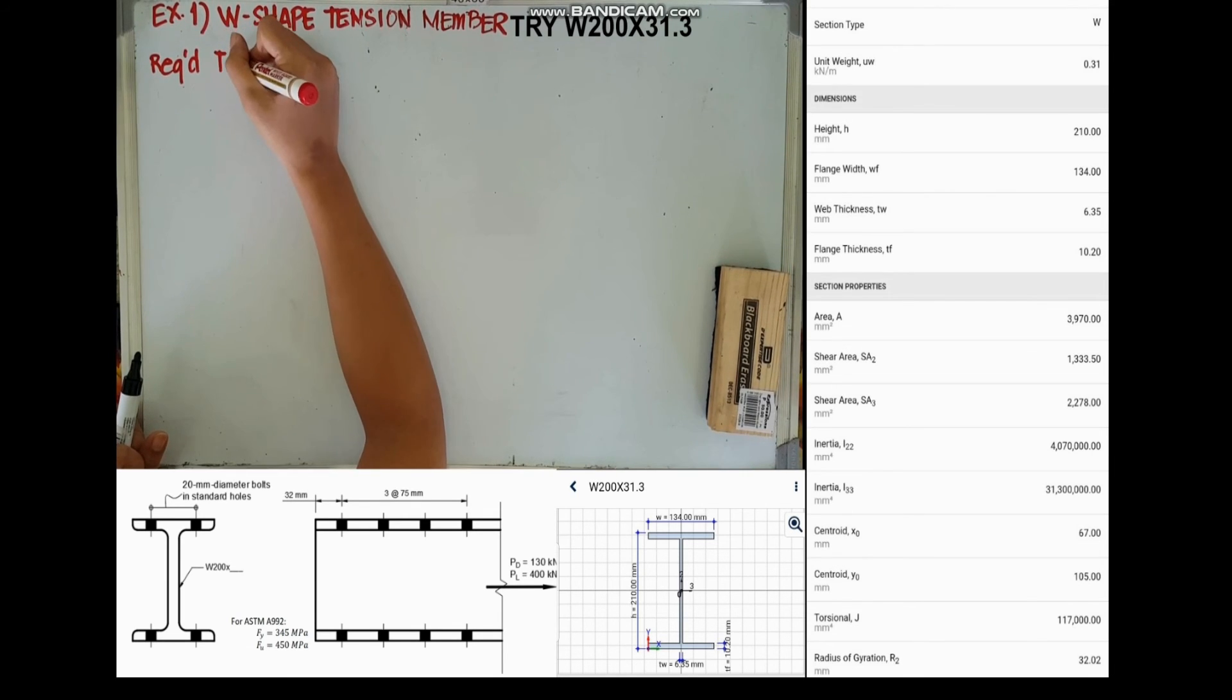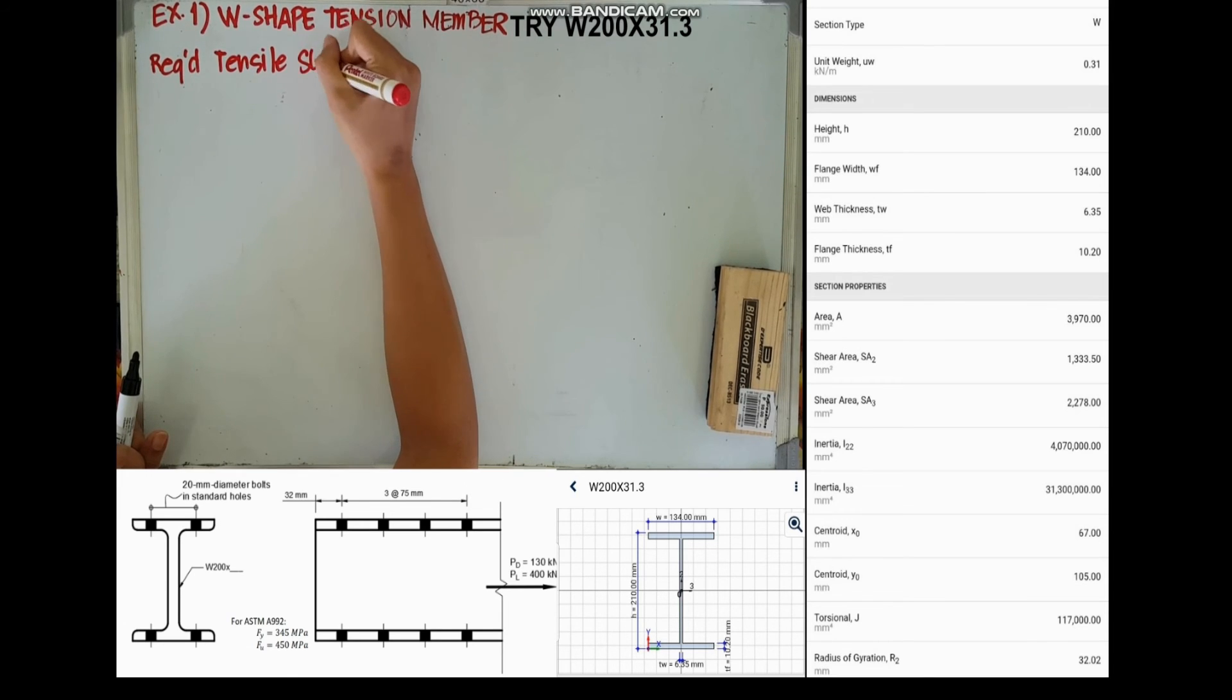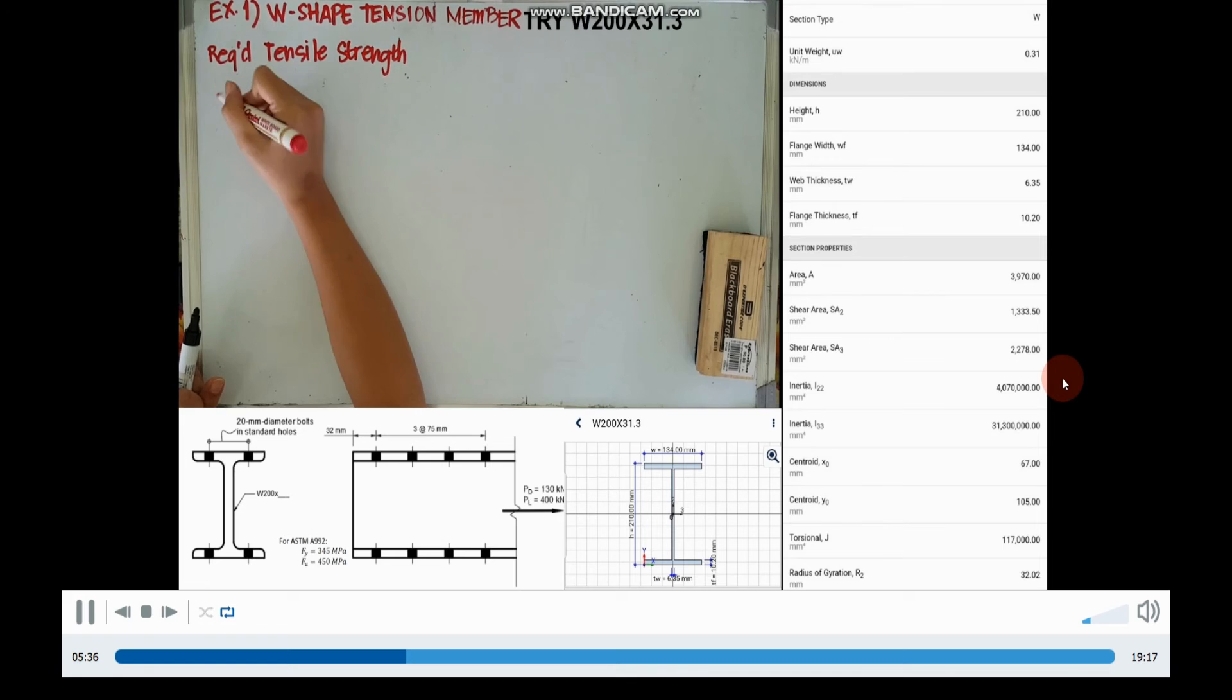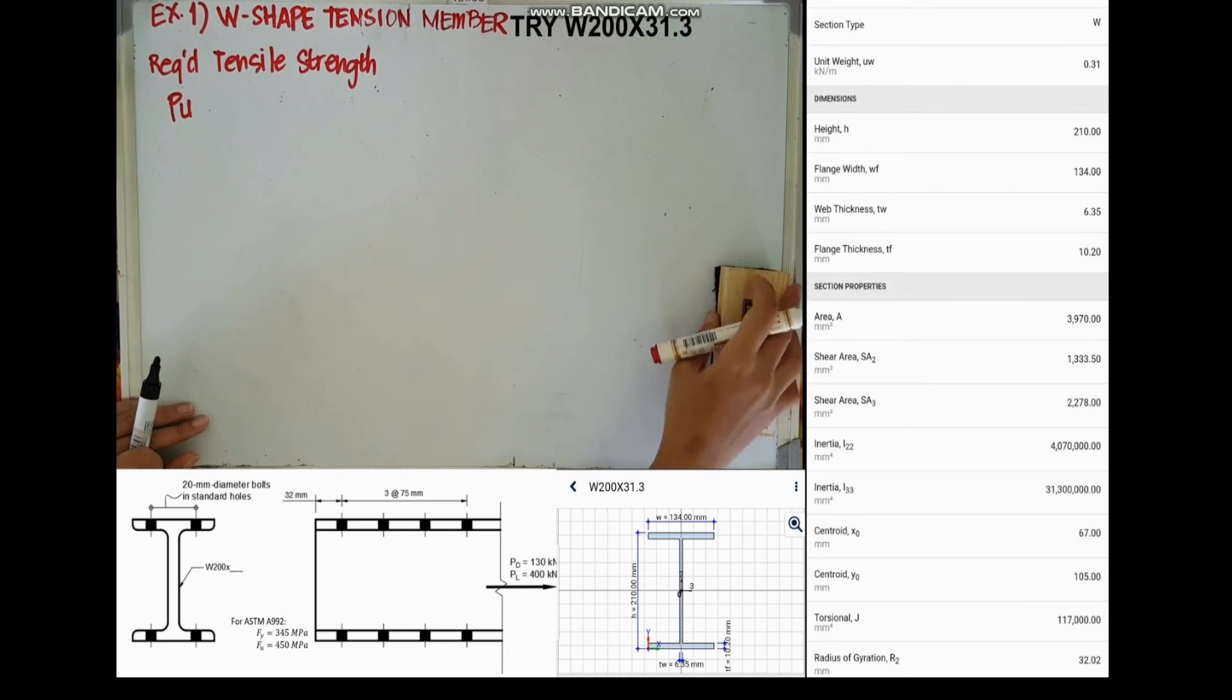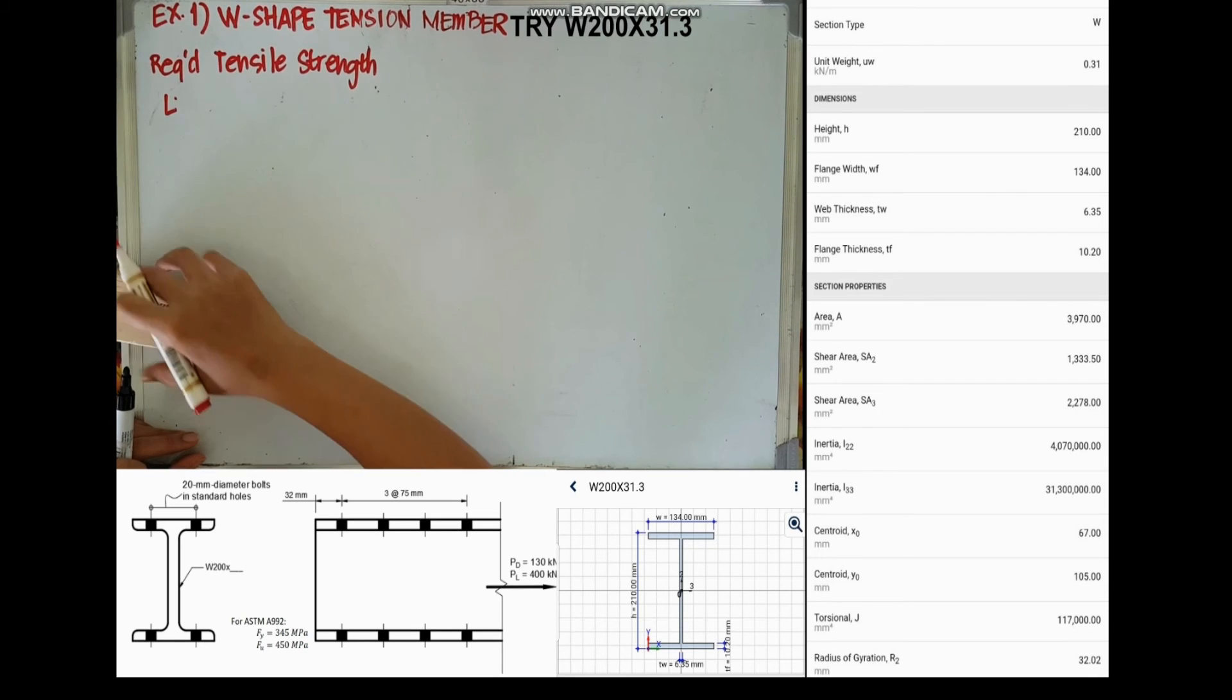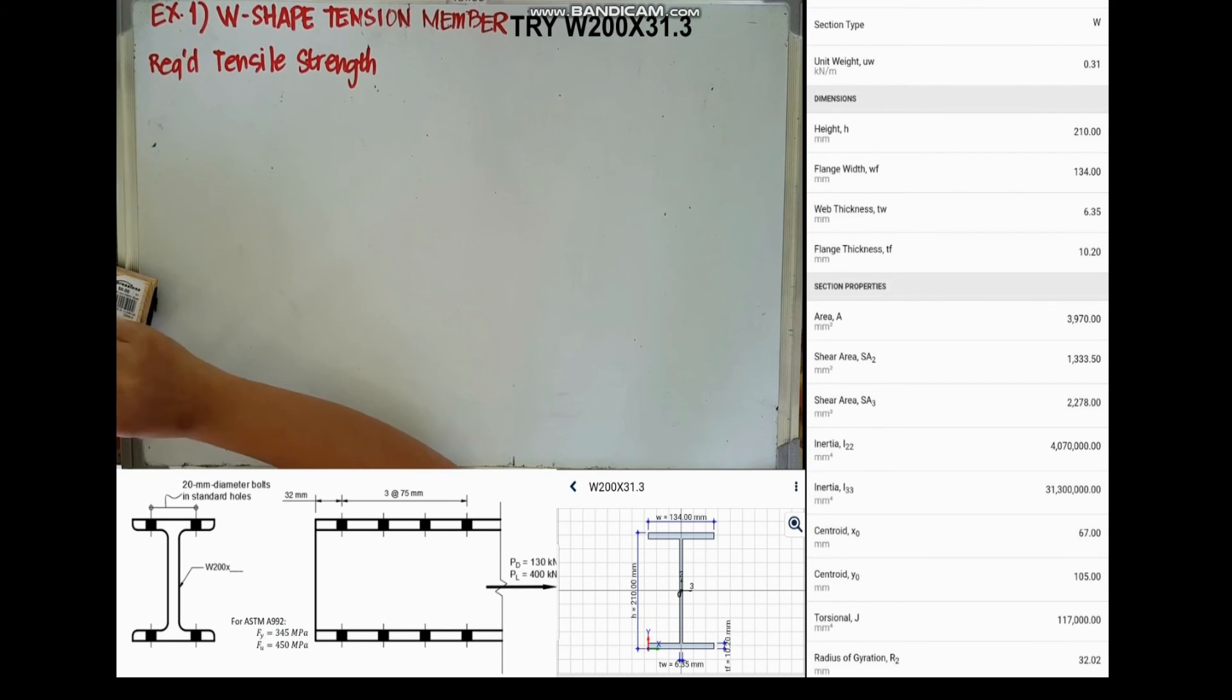Our length of connection is 3 at 75mm, dead load is 130kN, live load is 400kN. On your CSI Steel application you can search the different geometrical properties of the section, and you can download the tool on the Google Play, CSI Steel application.